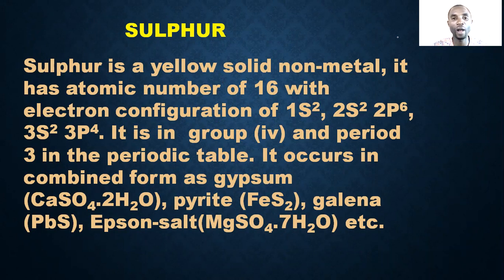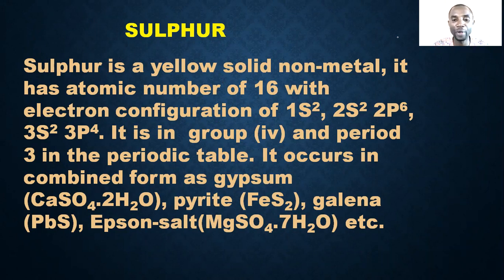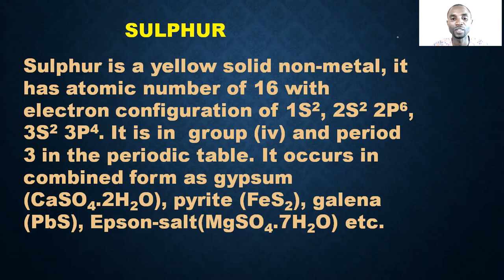Sulfur is in group 4 and period 3 in the periodic table. It occurs in combined form as gypsum, as pyrite (iron pyrite), galena, and Epsom salt. These are the areas where sulfur occurs in a combined state.